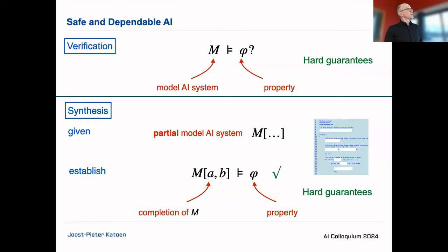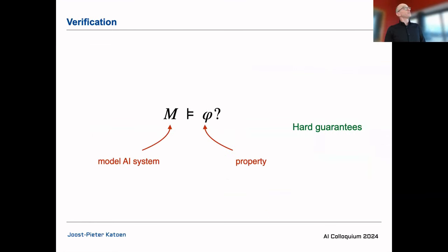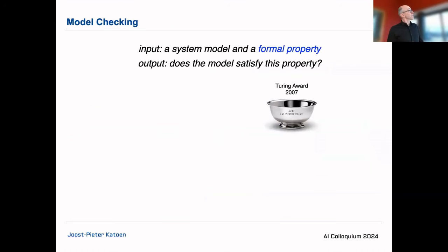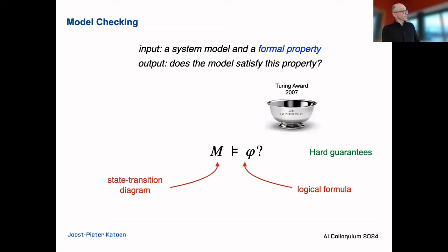Let's start with verification. The technique is called model checking: the input is a system model and a property, and the question is does this model satisfy the property. This approach has won several awards. We have an automaton model — a state transition diagram — and a property cast as a mathematical logical formula, and we provide a hard guarantee.